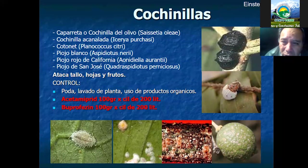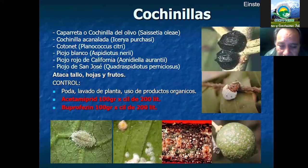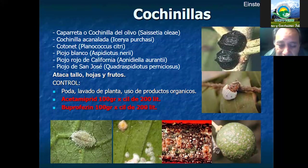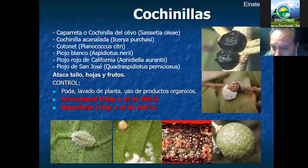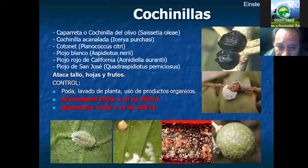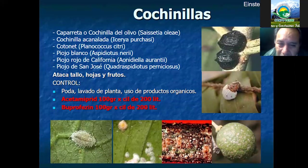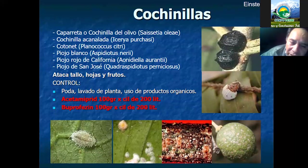Tenemos otra plaga: la cochinilla. Estos son atacados principalmente en las frutas, los tallos y las hojas. Hay una diversidad de especies que pueden estar atacando de acuerdo a la zona y a las condiciones climáticas y de densidad. ¿Cómo se controla? Similar a las otras plagas: antes de la floración se debería haber hecho una buena poda, un buen lavado de todas las hojas, tallos y toda la planta, y después utilizado un control preventivo para la eliminación de todos estos insectos hospedados en alguna parte de la planta.